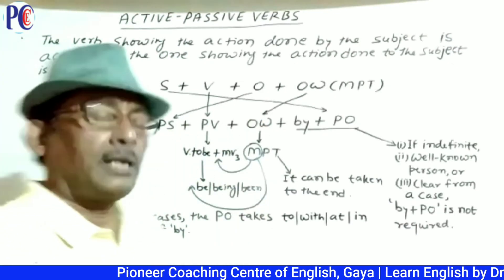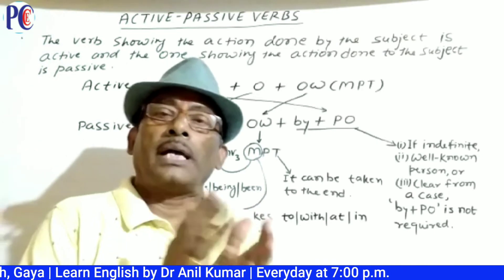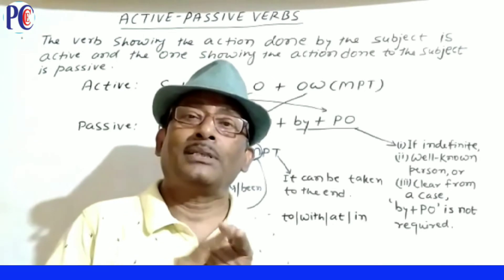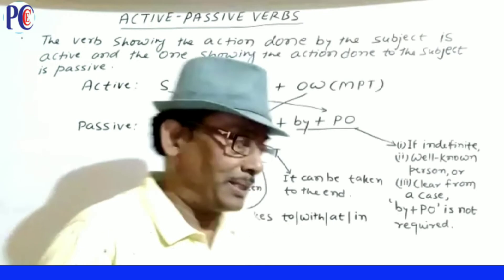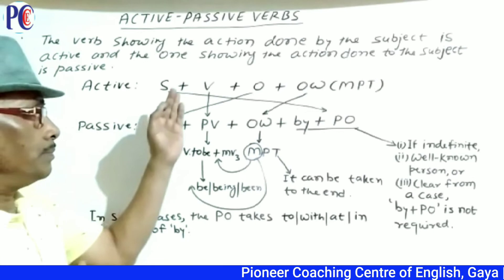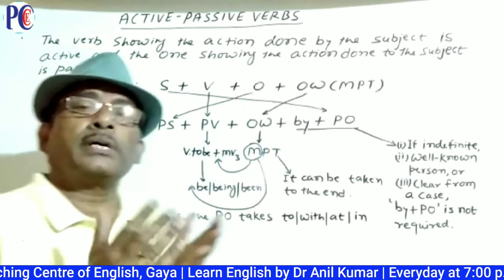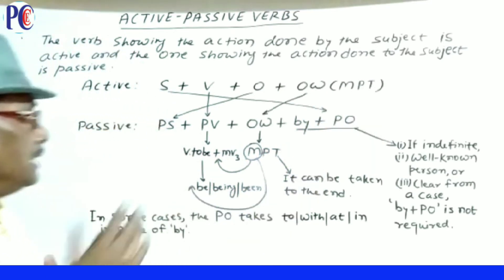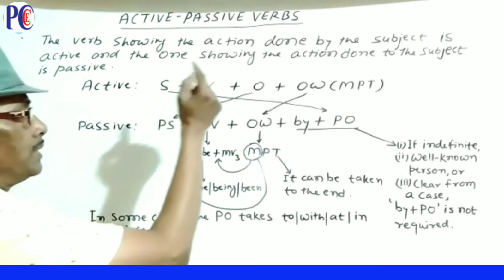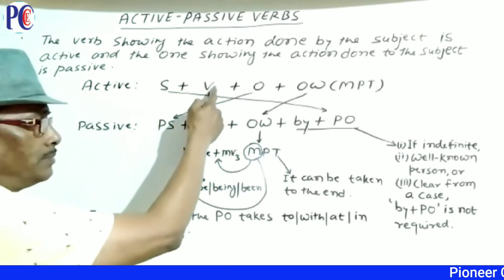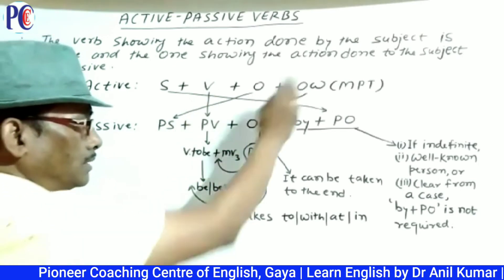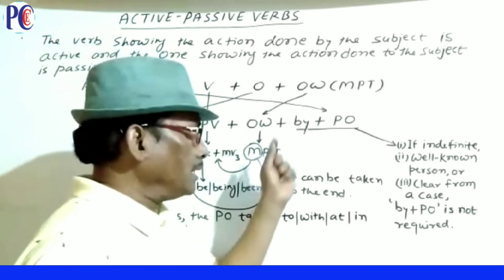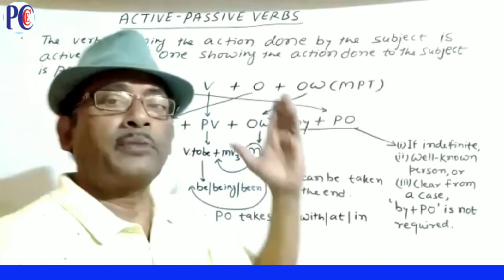This diagram will show how the active voice sentence can be changed into passive. In an active sentence we have: subject + verb + object + other words. Other words include adverbs — adverb of manner, adverb of place, adverb of time. When changed to passive: the object becomes the passive subject; the verb becomes verb-to-be + V3; other words come after the passive verb; and the active subject generally comes as the passive object with 'by' — also called the passive agent.